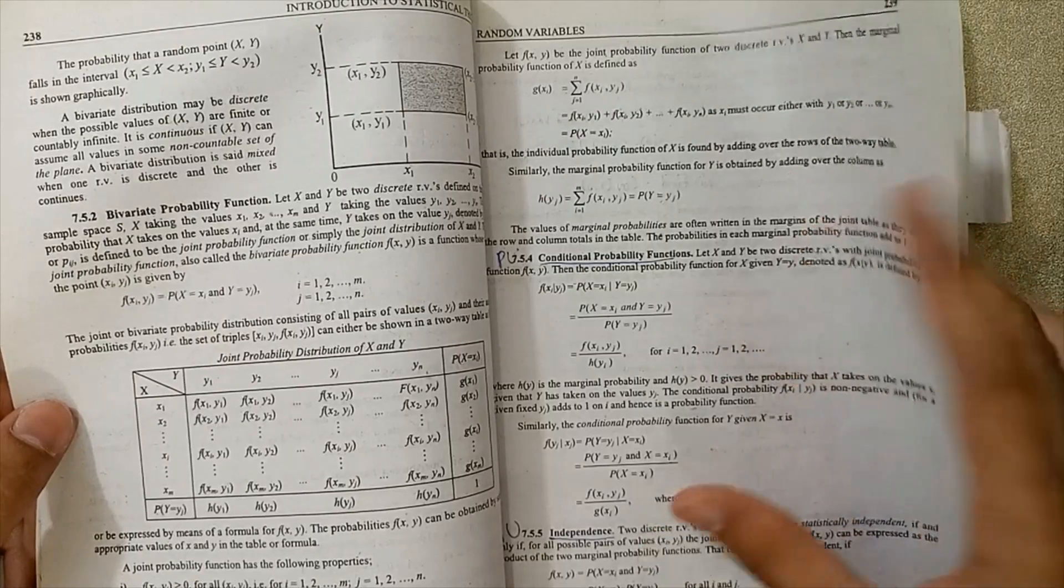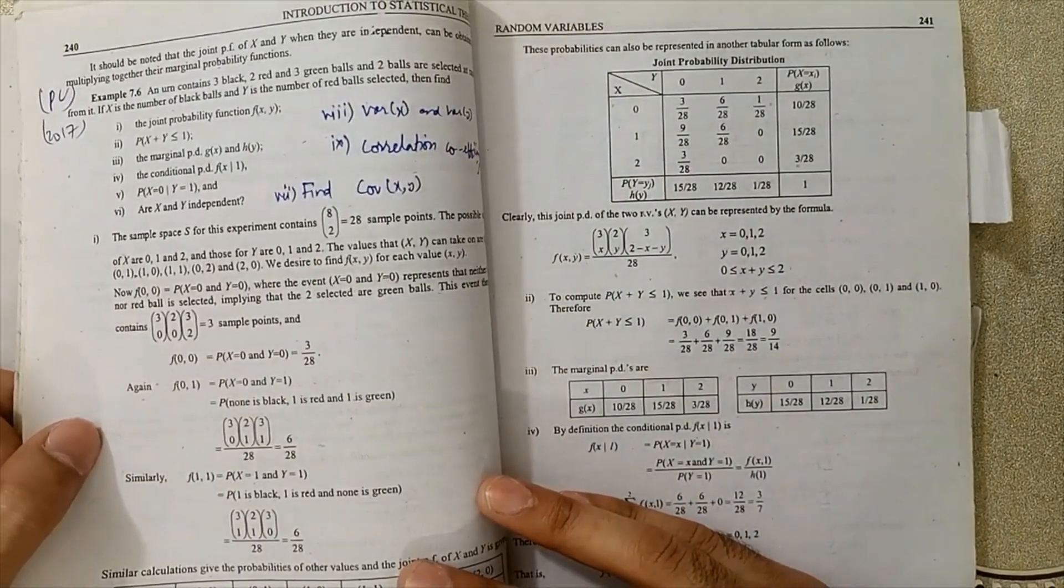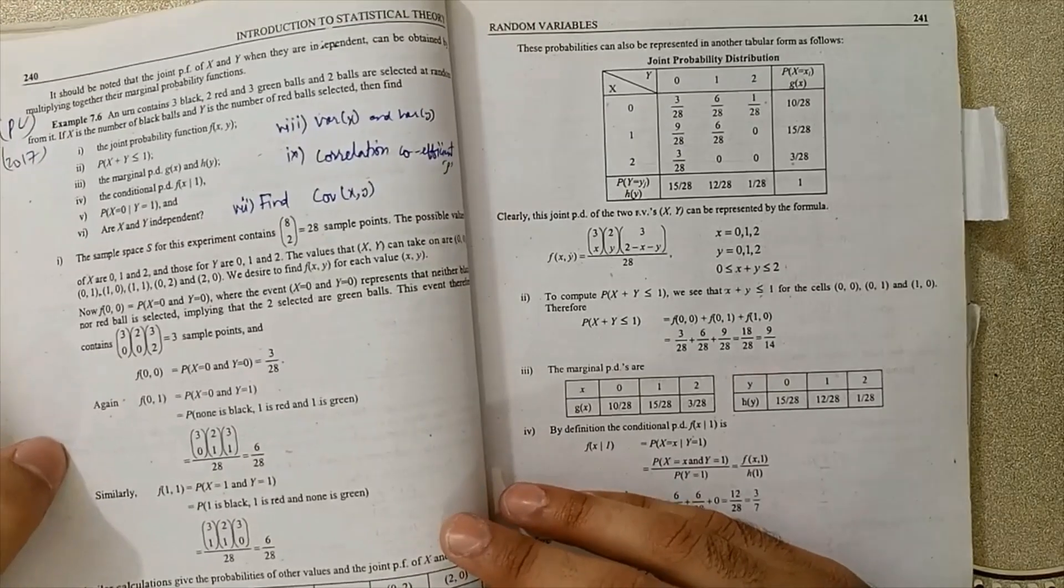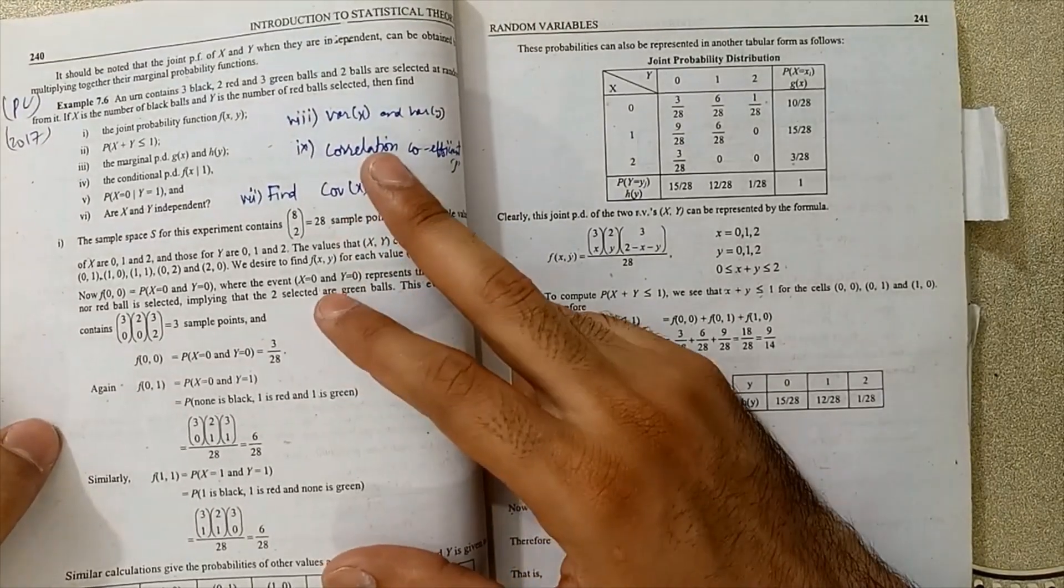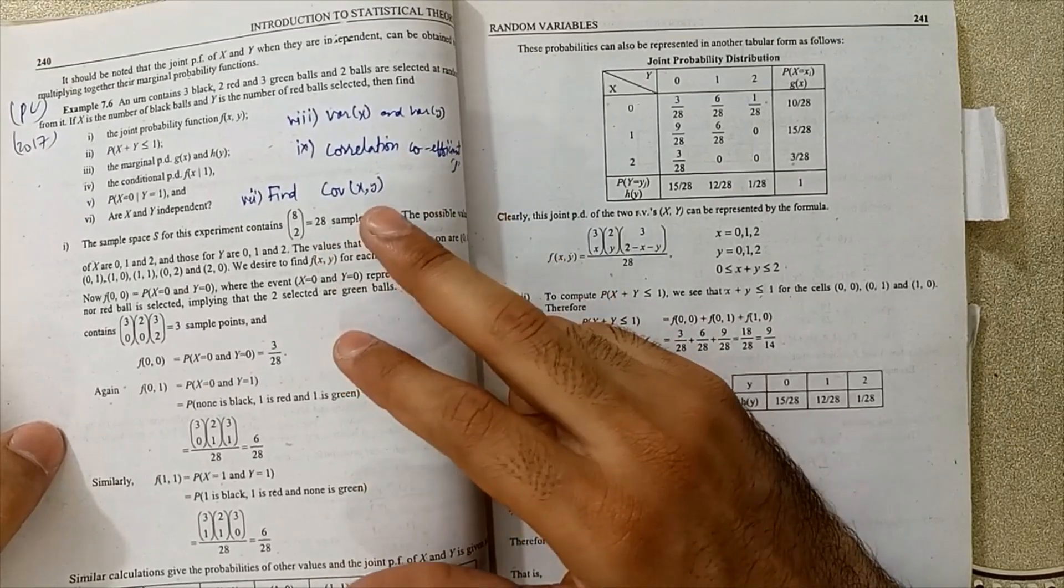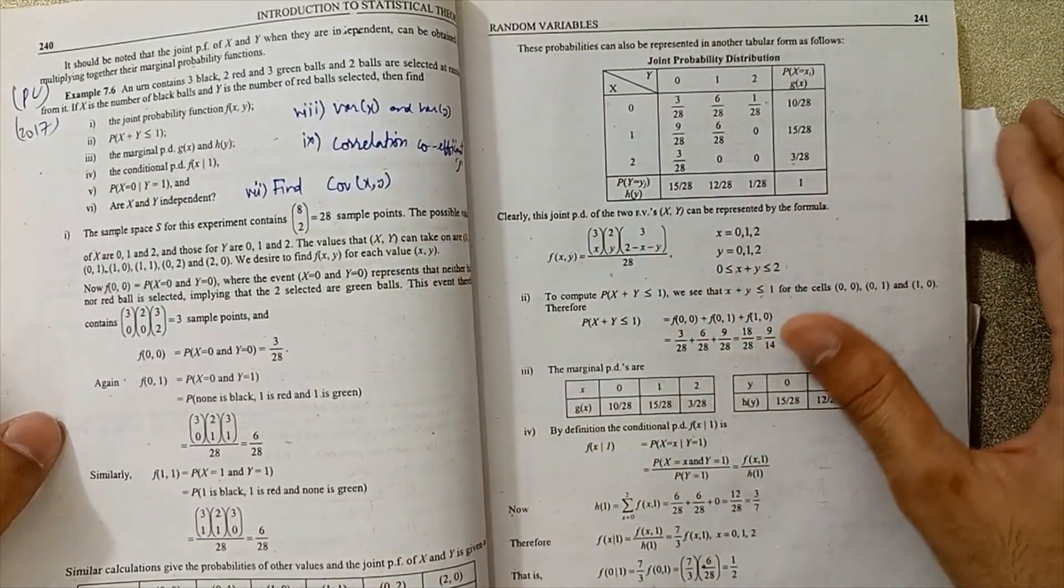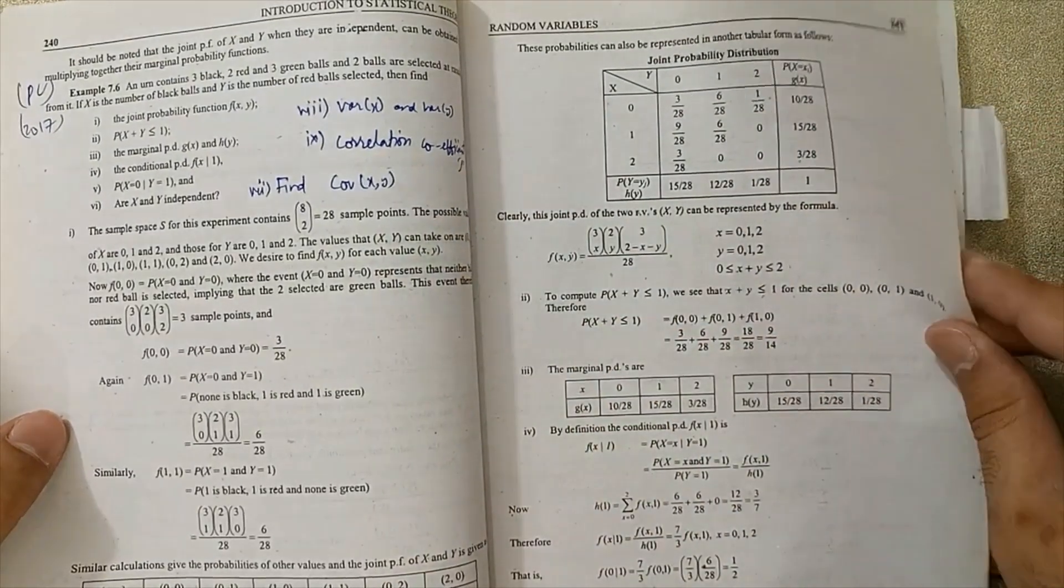Conditional probability distribution and independence are very important. At page 242, example 7.6 is important, and you can add points on how to calculate correlation coefficient and covariance. These points are important for practicals and numerical exams.